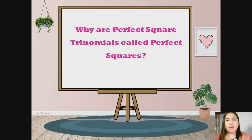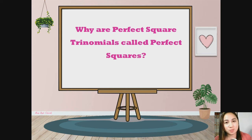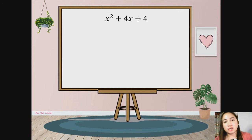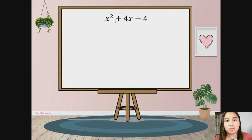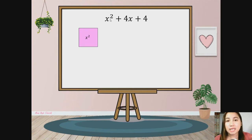So now here is a question: why are perfect square trinomials called perfect squares? Algebra tiles will help us answer this question. Let's take a look at this perfect square trinomial x-square plus 4x plus 4. To represent this perfect square trinomial, we will be needing the algebra tiles. We will represent it using the algebra tiles. For this trinomial, I will be needing x-square, because we have x-square as a term.